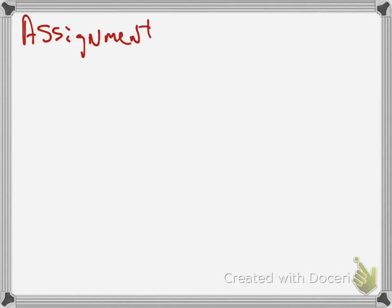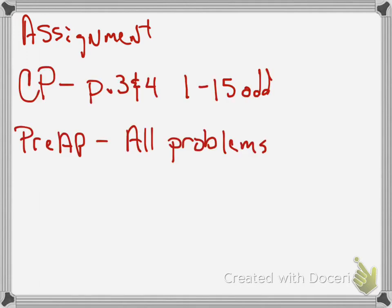For the assignment: CP students, do pages three and four of the worksheet — the odd problems, one through fifteen. Pre-AP students should be able to finish out all the problems; most of this is pretty quick to type into a calculator. If you have trouble with the application problems, do your best. As always, if you have questions feel free to email or text me — I'm replying as quickly as I can. Stay safe, take care, have a good day, and thank you for your time.